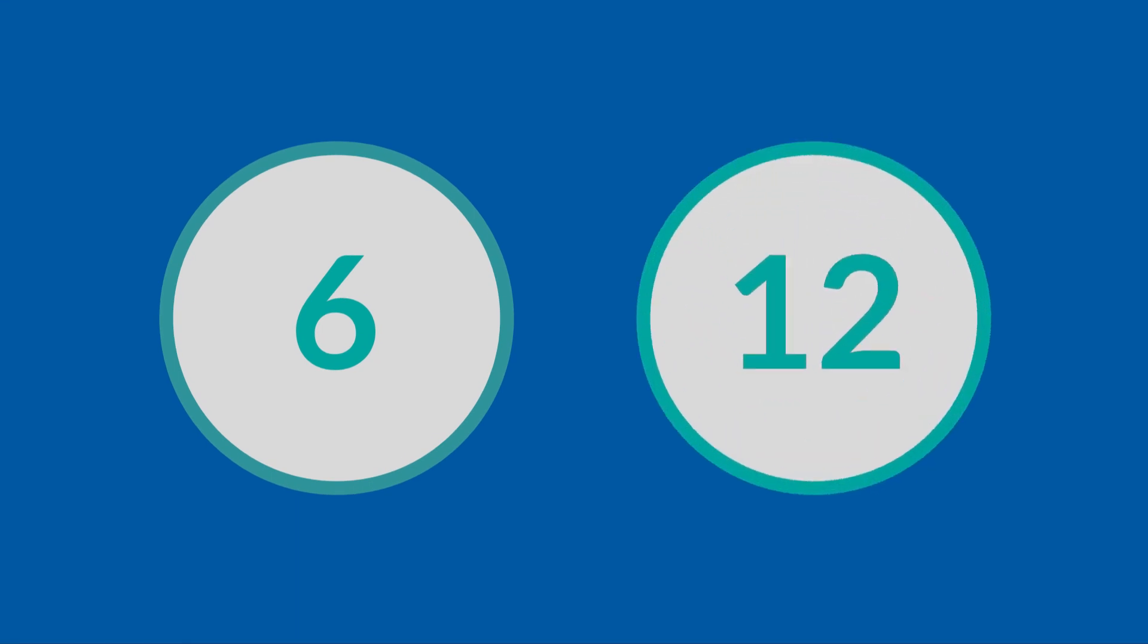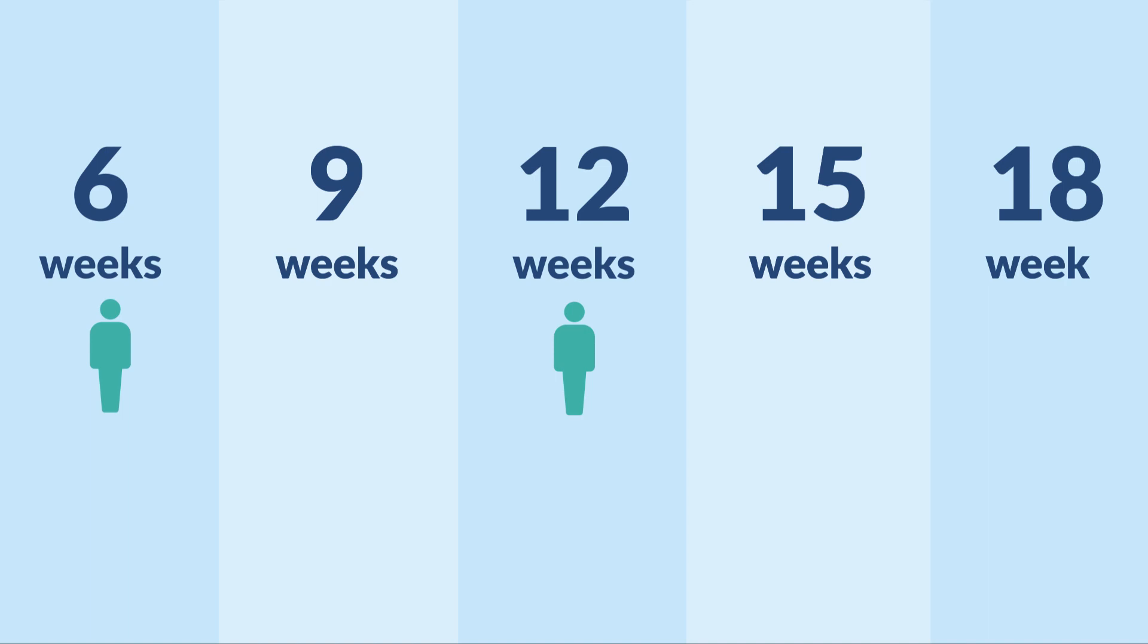Initially we'll look at the difference between giving treatment every six weeks or reducing to every twelve weeks. We'll assess how well patients do, and if those on the twelve weekly treatment do worse, we'll stop the study. If there's no obvious difference, we'll also start entering patients into nine, fifteen, or eighteen weekly treatment groups.